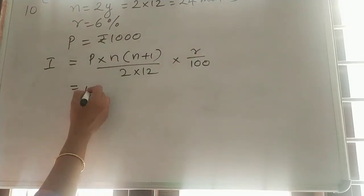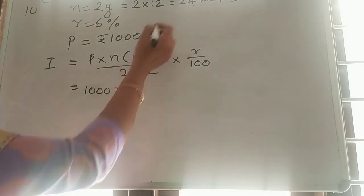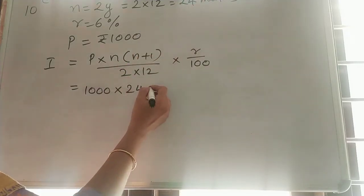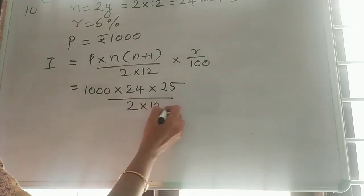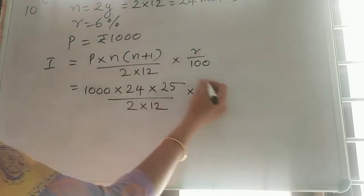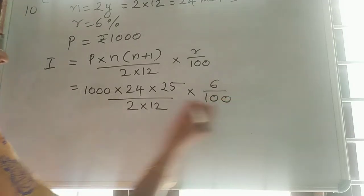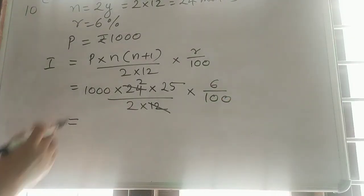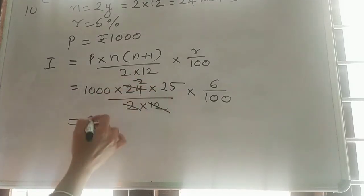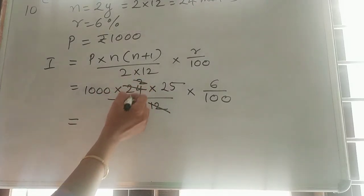So, what is P? 1000 into N, 24 months. So, 24 into 24 plus 1 which is 25 divided by 2 into 12 into R as 6, 6 by 100. So, cancel this. 2, 2. Here 12 and 24, 2 times. Then, again this 2 and 2 cancel.